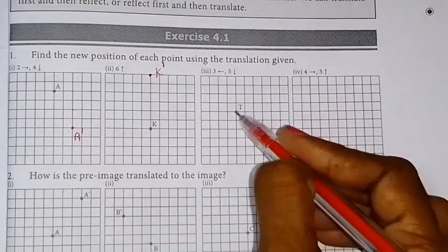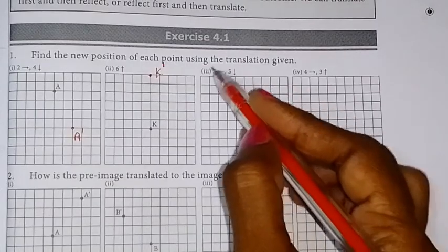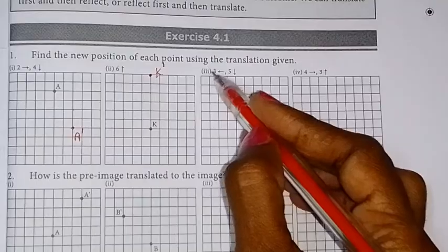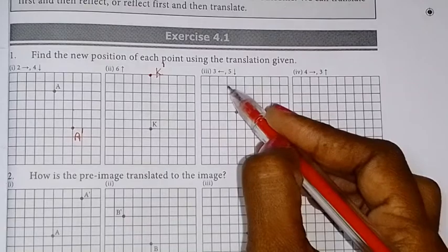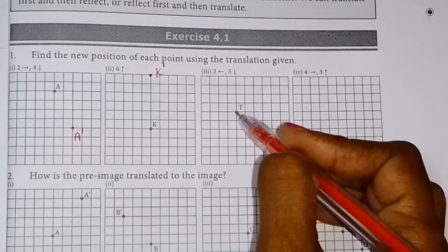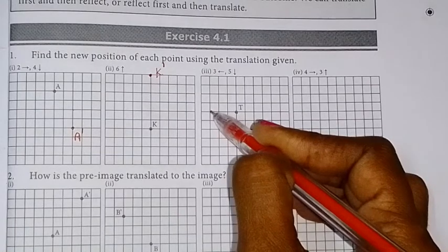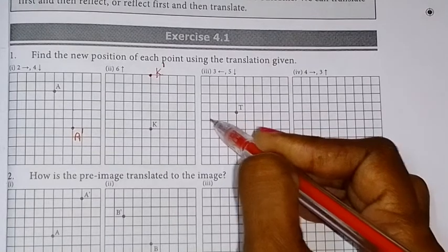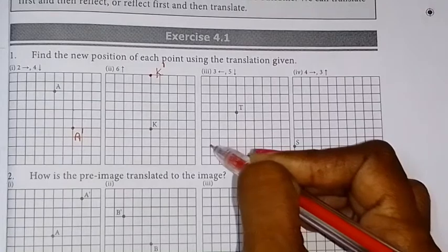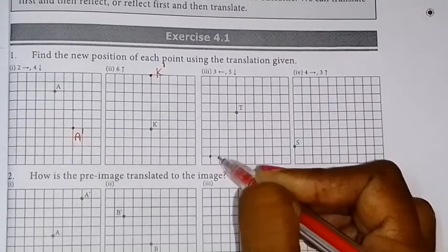P is the position. Translation: 3 units left side, 5 units downwards. So, first 3 units left side move: 1, 2, 3. 5 units downwards: 1, 2, 3, 4, 5. So, here is P'.